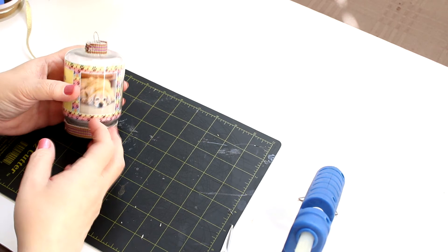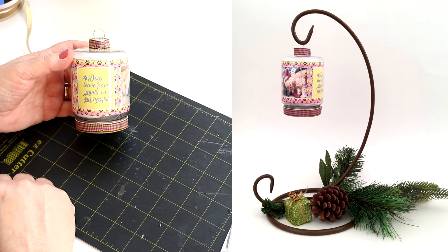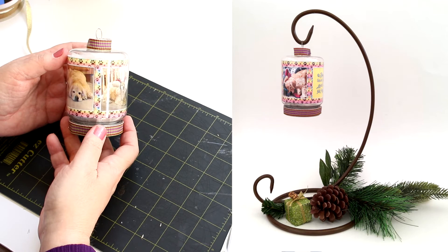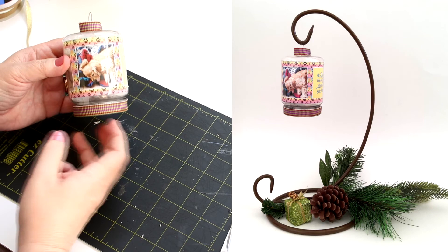And then this one, this is my little doggie who has since gone to the Rainbow Bridge. You know, dogs leave paw prints on our hearts. Isn't that the truth? And so I thought this would be a nice one to put a few of his photos in there and then I can put that on the tree. So that's a pretty simple one.